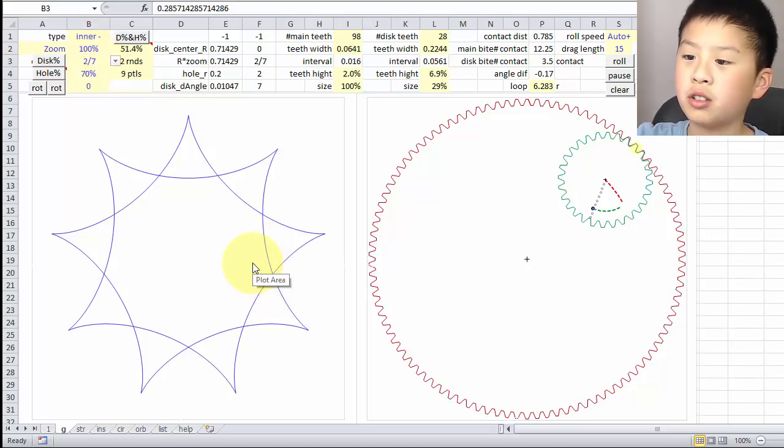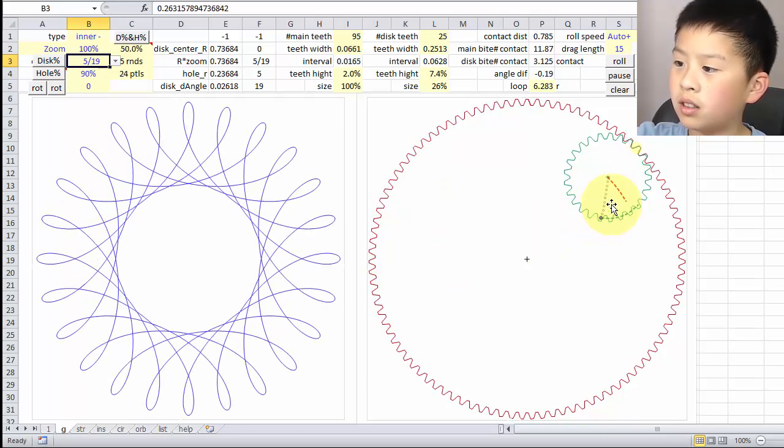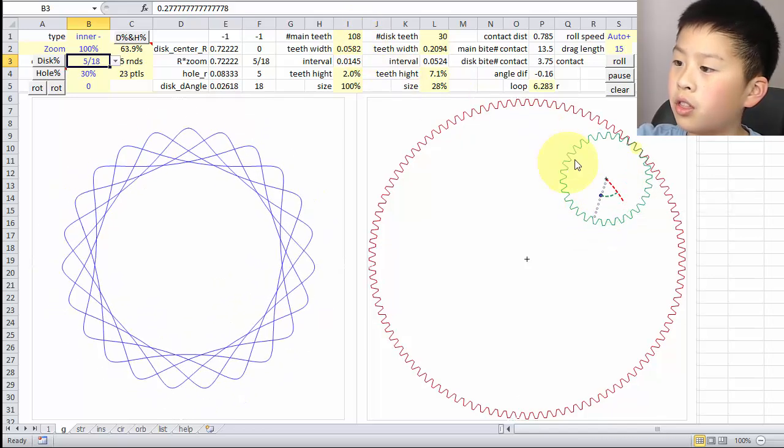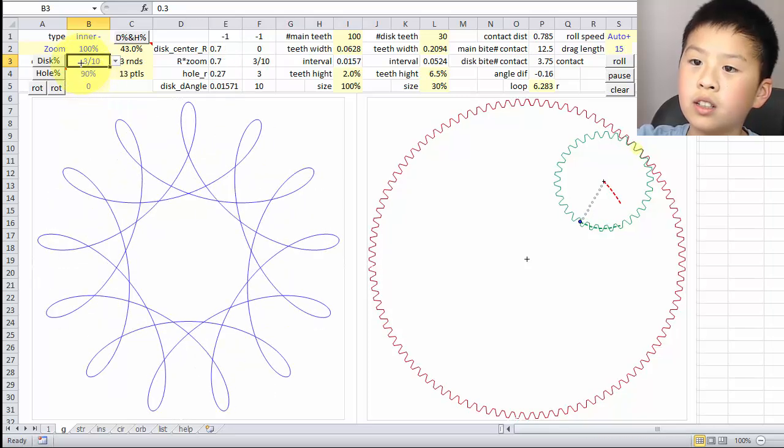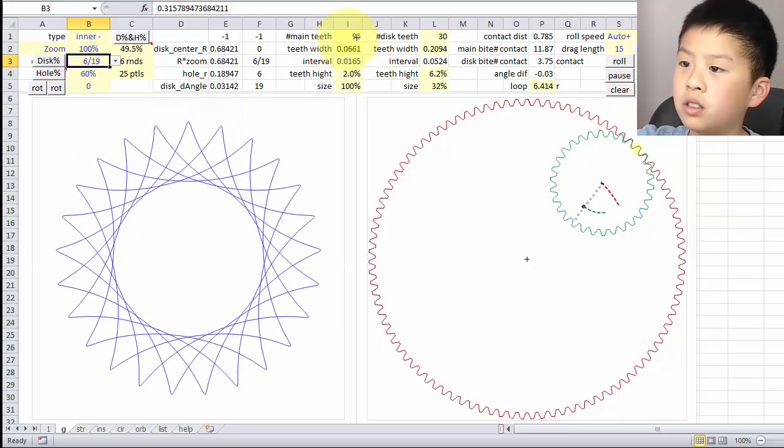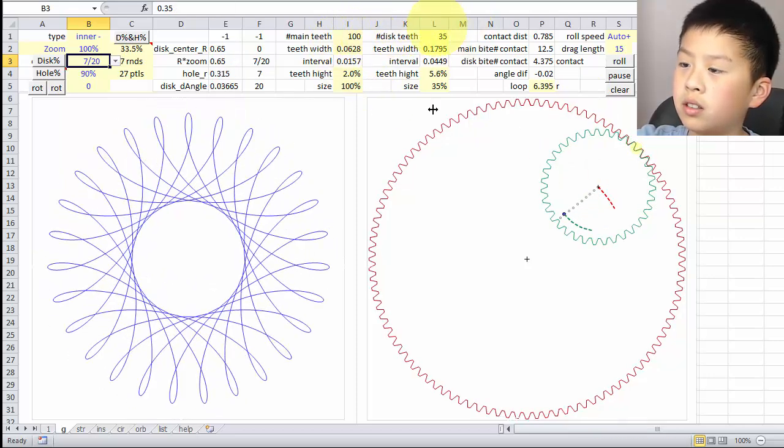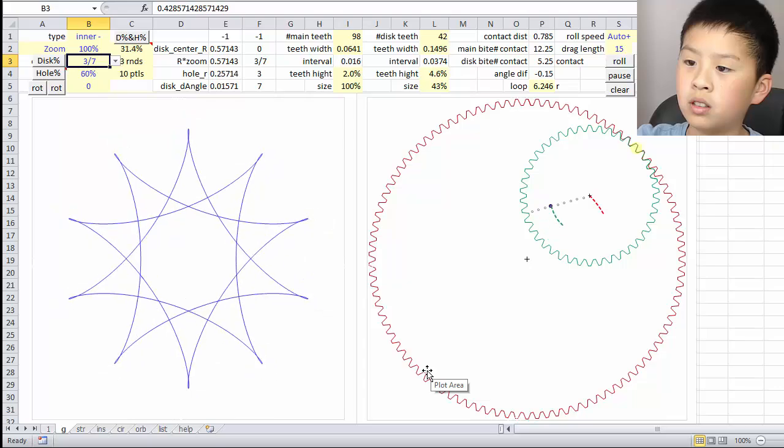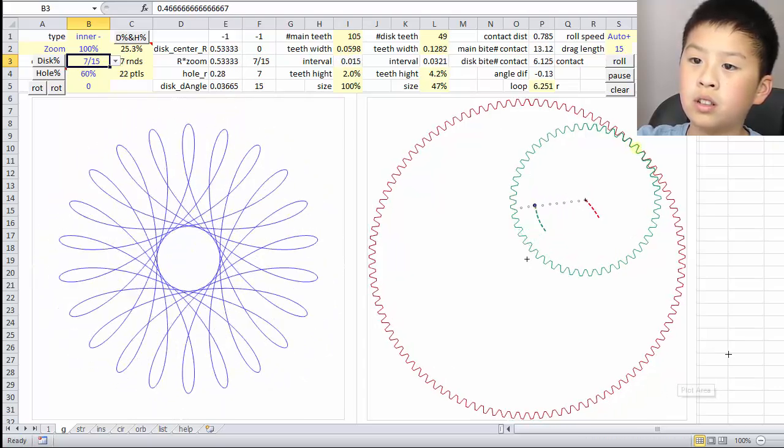Another thing I'm going to show you is the ultimate dynamic mode where it will change both the hole percent and the disc size. Starting. You can see that the hole percent is moving along this line and the number of teeth are changing according to the disc sizes. You can see these two as they change.